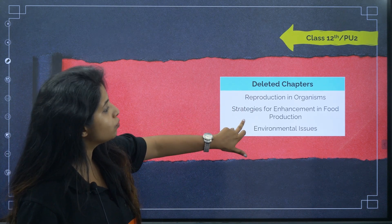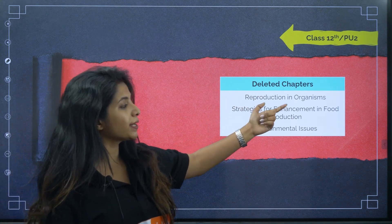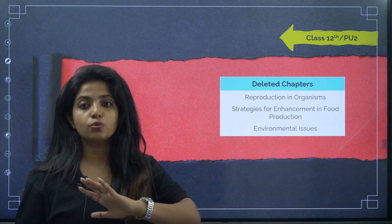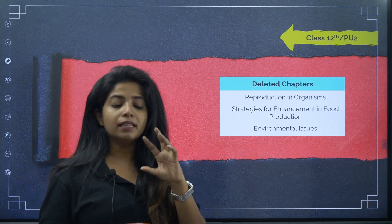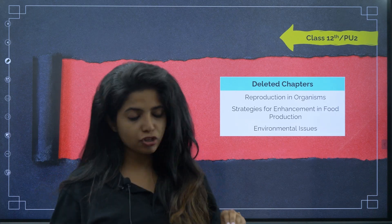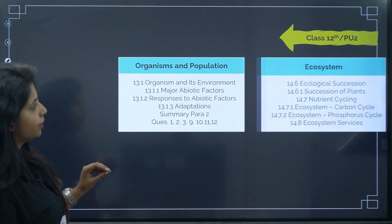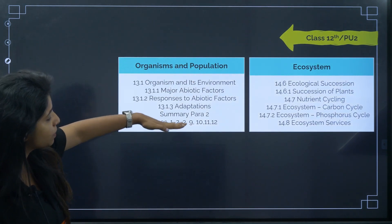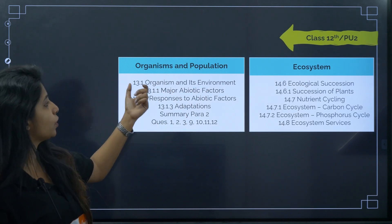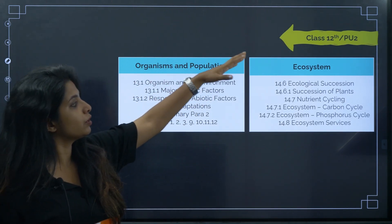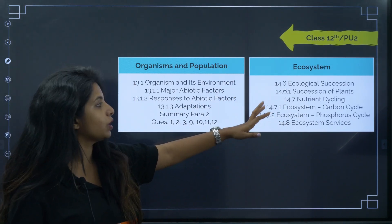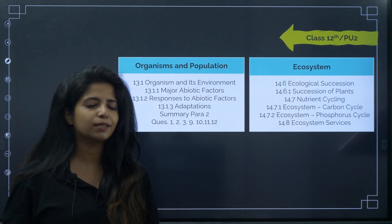You must take care not to study these deleted chapters: 'Reproduction in Organisms' is not there, 'Strategies for Enhancement in Food Production' is not there, and 'Environmental Issues' is also not there. In some chapters they haven't deleted the entire chapter — only certain topics. For example, in 'Organisms and Population,' several topics are deleted, and in 'Ecosystem' topics like carbon cycle and phosphorus cycle are deleted.